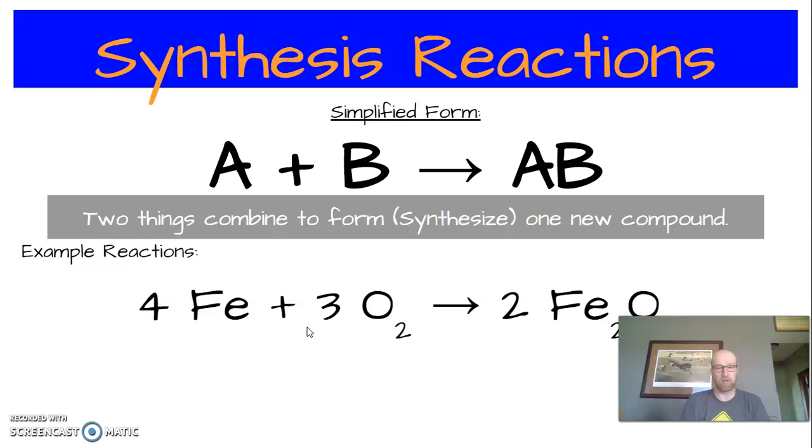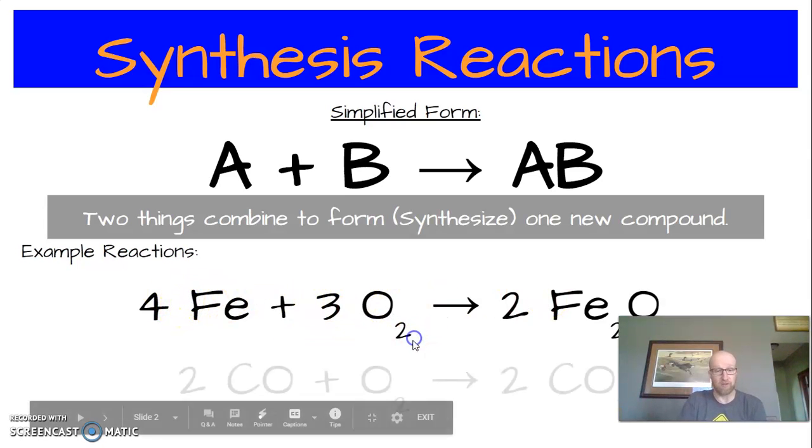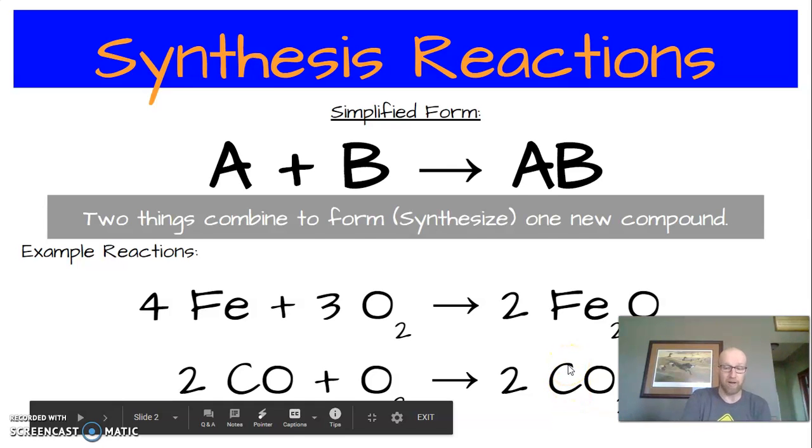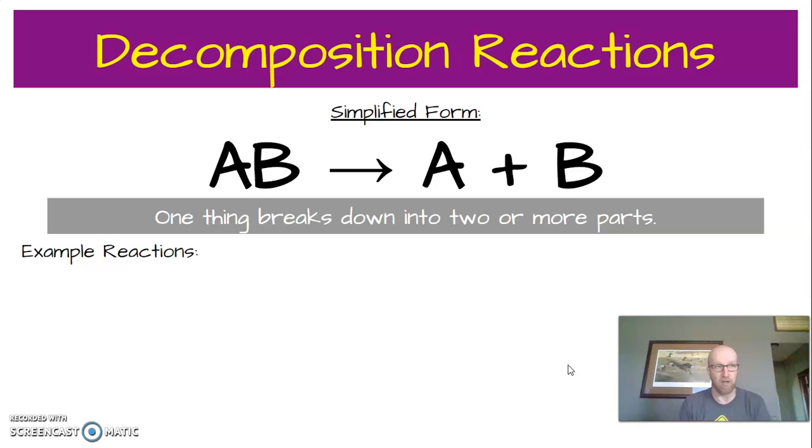There'll be a few things on the left that could join together to make one new product. Some example reactions here: When we make rust, iron combines with oxygen to make iron three oxide. If you take carbon monoxide, you can add oxygen to it and make carbon dioxide. Notice that on both of these reactions, there's only one product.